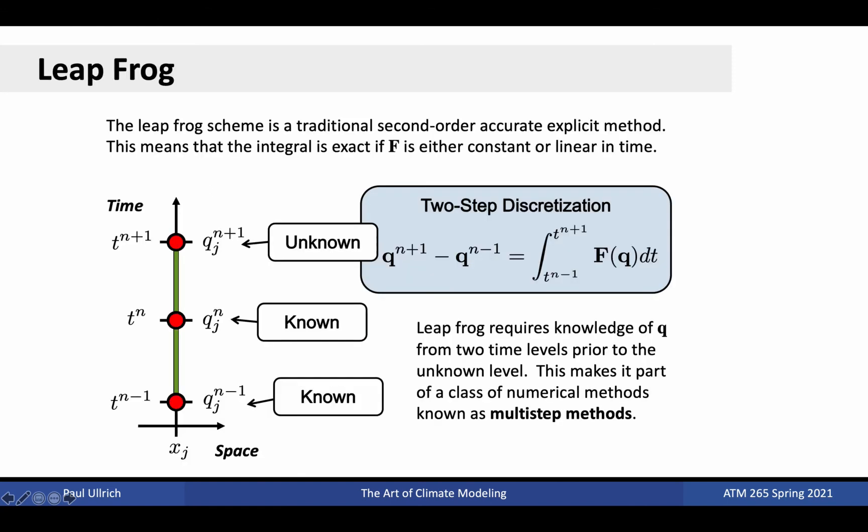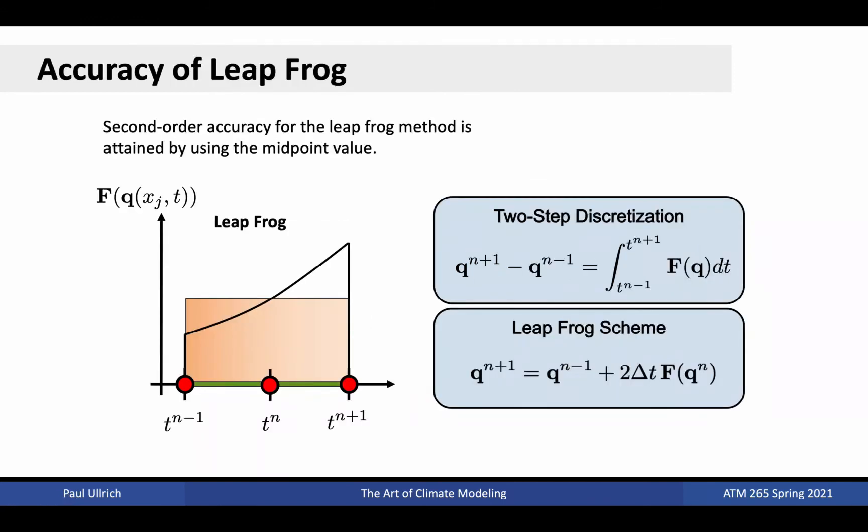In light of the issues with first order methods, one of the first explicit second order methods introduced in atmospheric science and a method commonly paired with spectral transform methods is the leapfrog scheme. The idea behind this method being that if we can incorporate additional information from earlier in time, we can build a more accurate solution. Methods of this type, those that rely on information from previous steps, are referred to as multi-step methods. The two-step discretization then integrates the discretization from time n minus 1 to time n plus 1, yielding the integral on the right. As a second order method, it can be shown that the leapfrog scheme is exact if the time tendency f is either constant or linear.